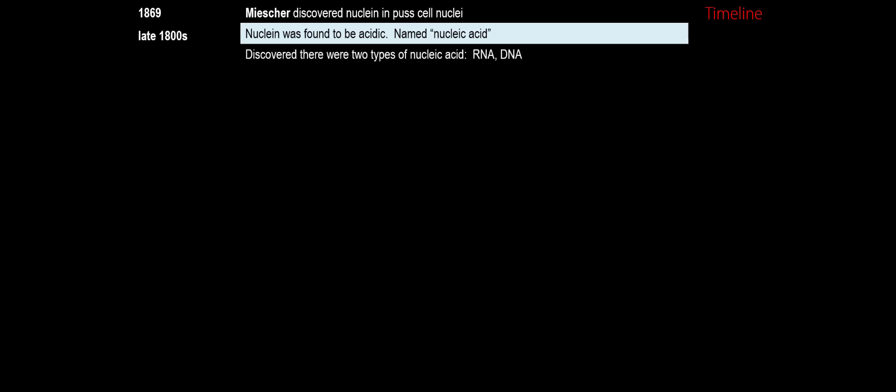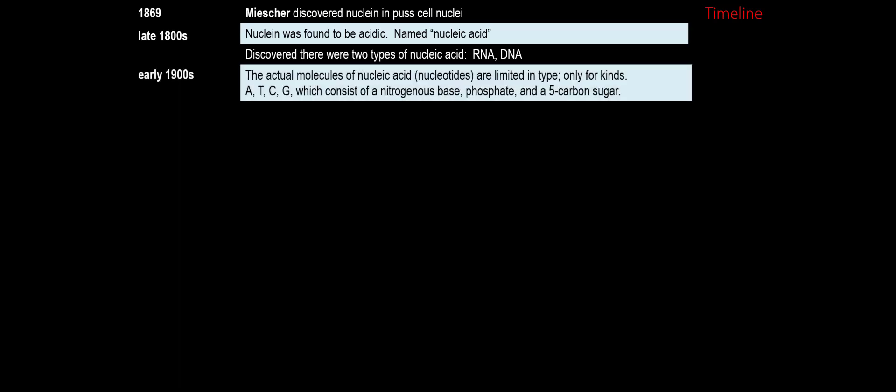They still didn't know much about it, though. Eventually they learned that there were two different sugars associated with it, so you had ribose and deoxyribose. Instead of just plain old nucleic acid, we had ribonucleic acid and deoxyribonucleic acid. By the early 1900s, when Mendel was being rediscovered and people were talking about chromosomes and watching things like mitosis and meiosis, it was found that DNA and RNA turned out to have building blocks. There were only four kinds of building blocks found in DNA: adenine, thymine, cytosine, and guanine — the nitrogenous bases.